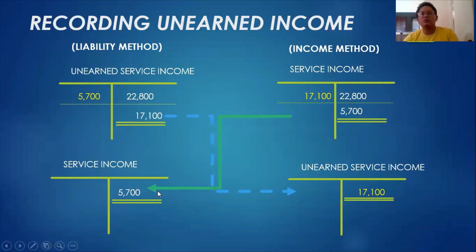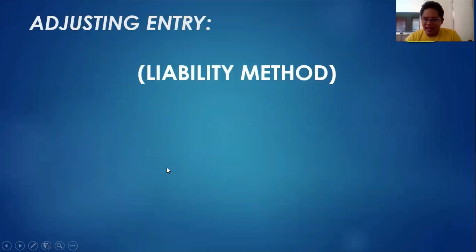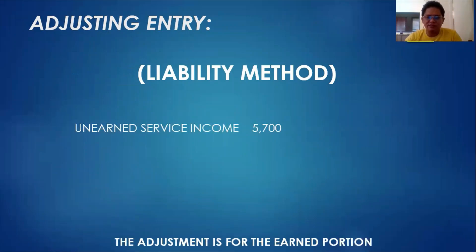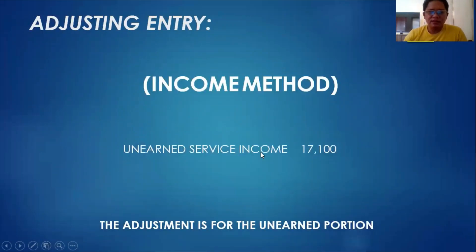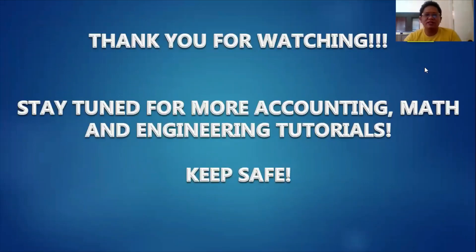To wrap this up: the adjusting entry under the liability method is to debit unearned service income 5,700 and credit service income 5,700 — we are recording the earned portion. Under the income method, the adjustment is debit service income and credit unearned service income for the unearned portion of 17,100. Thank you for watching and hopefully we'll see each other soon in our succeeding accounting, math, and engineering tutorials.